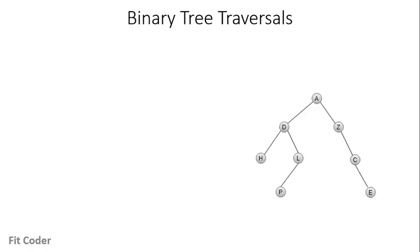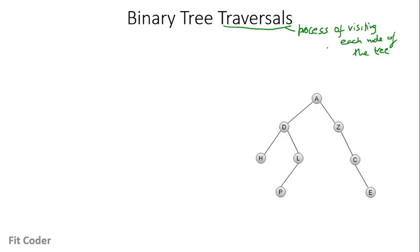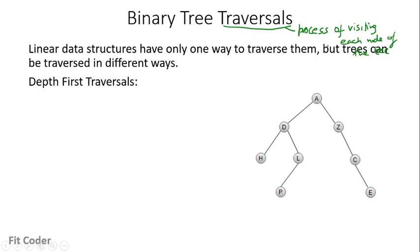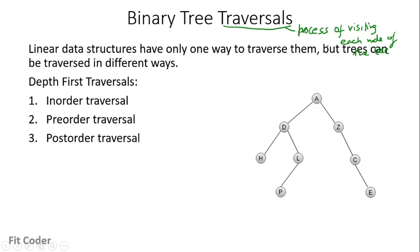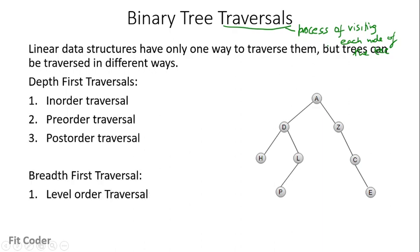Let's first understand what we mean by traversal. Traversal is the process of visiting each node of the tree. When we talk about linear data structures, there is only one logical way of traversal. But in case of trees, there can be many ways of traversing the nodes. If we classify the traversal techniques, depth-first search traversals include in-order, pre-order, and post-order, while level-order traversal is the BFS technique.